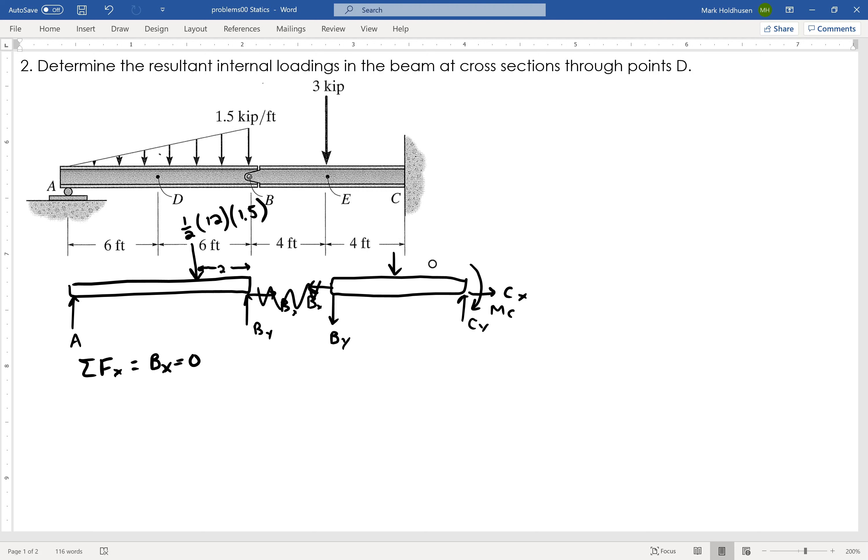Now, starting over on the left side, which is really all I'm looking for. If I can find A, I should be good to go. Okay, so first things first on this guy, I sum the forces in the X direction, and I find that BX equals 0.